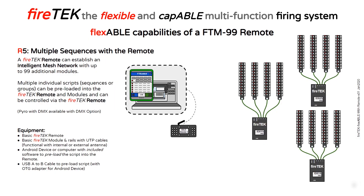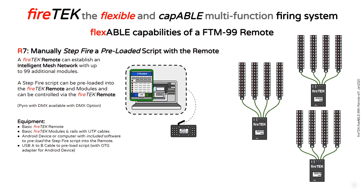The Android application gives you additional functionality complementing the remote. Sequences or individual scripts can be preloaded into the FireTech remote and modules and can be controlled by the FireTech remote across all of the networked modules. Just as you could step fire a preloaded script directly with the module, you can use the networked FTM-99 remote to step fire through a script across all of the networked modules. This script would be preloaded into the remote and transmitted to all of the modules via the Intelligent Mesh network.